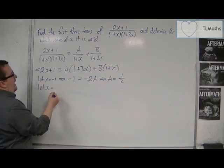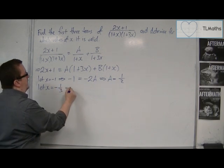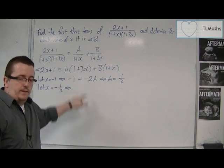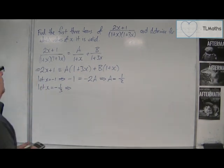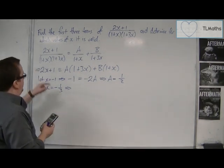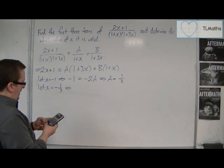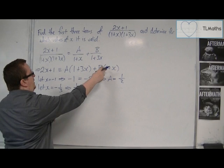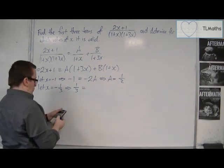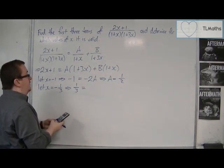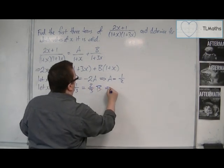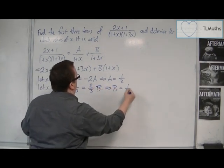Then I'm going to have to let x be minus 1 third in order to eliminate that bracket there. So we've got 2 lots of minus 1 third. So minus 2 thirds plus 1 is 1 third. And that's going to be minus 1 third, or 1, take away 1 third. So that's 2 thirds. And so b would have to be 1 half as well.